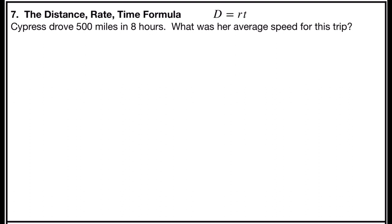Problem number seven is the distance rate time formula. It says d equals rt. The problem says Cypress drove 500 miles in eight hours. What was her average speed for this trip?